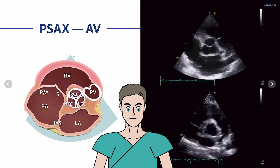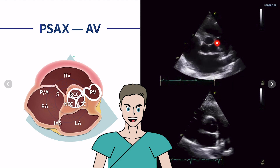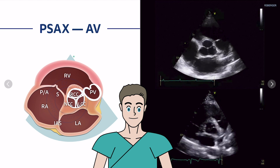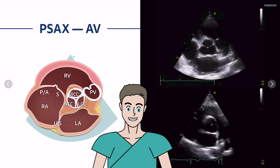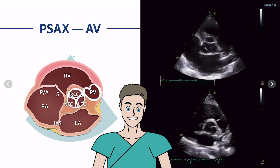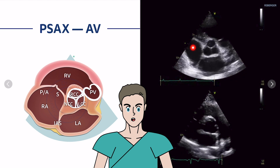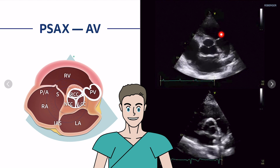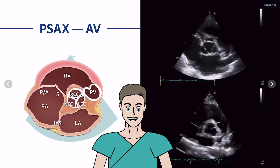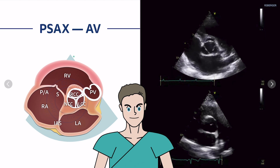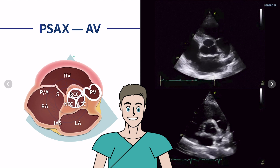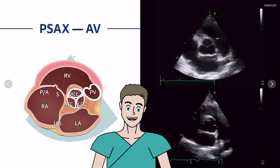In the B-mode image, you can see the aortic valve in the center. Not always is image quality perfect, but here you can differentiate the right coronary cusp, the left coronary cusp, and the non-coronary cusp, as well as the left atrium, right atrium, right ventricle, right ventricular outflow tract, pulmonic valve, and pulmonic trunk. Note that the left atrial appendage can also be visualized in this parasternal short axis view.